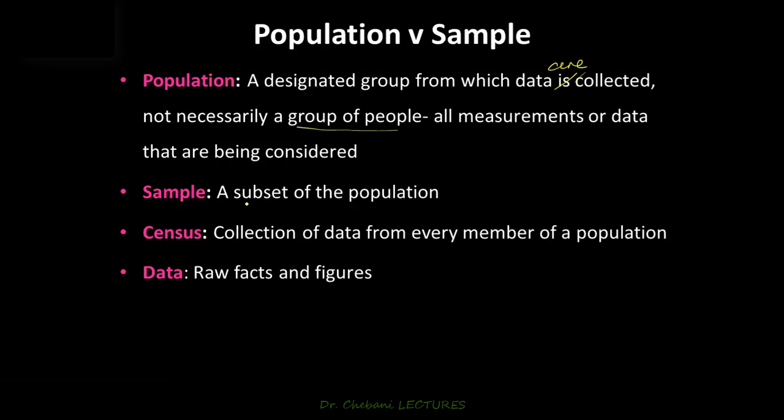A sample is simply a subset of the population. It's important to distinguish between sample and census. Whereas a sample is a subset of the population, and when you sample, you basically collect data from a few select members of a population, when you conduct a census, collection of data is done from every member of a population. So in a census, you get all measurements or data that are being considered—everyone in the population would be involved in a census.